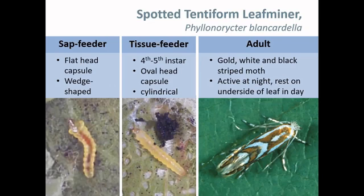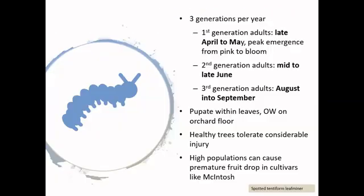The first pest we're going to look at is spotted tentiform leaf miner. This is a pest that is controlled quite well in existing insect management programs across the province. However, it's entirely possible there could be an increase in damage with the loss of some control products on the market. There are a few life stages you will see in the orchard. The larval stage is divided into two stages: the sap feeder stage, which has a flat head capsule and is quite wedge-shaped, and the older instars known as tissue feeders, which have oval head capsules and are quite long and thin. You may also see the adult — a gold, white, and black banded moth — fly away from rest on a leaf.